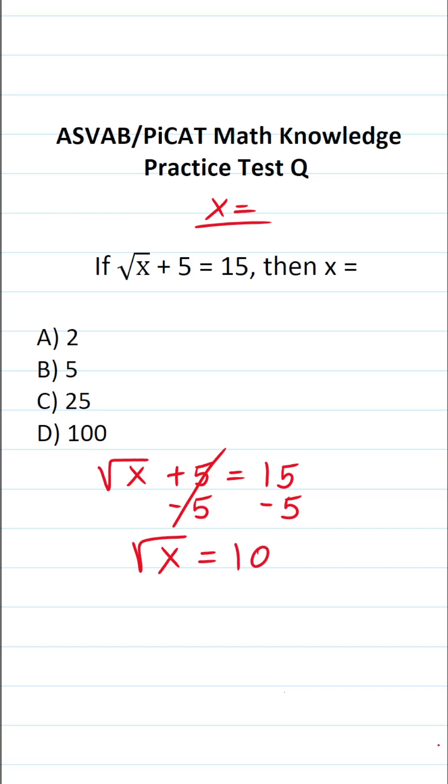Now, to get rid of this square root, we're going to do the opposite operation. That is to say, we're going to square it. And at the same time, we're going to square this 10. A square of a square root cancel each other out, leaving us with just x over here.